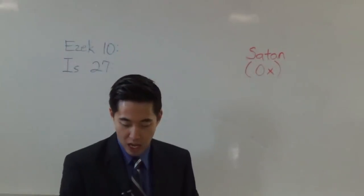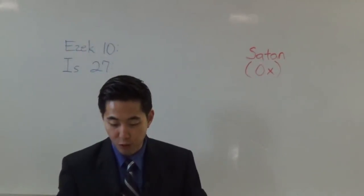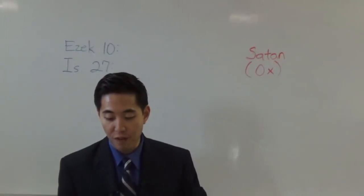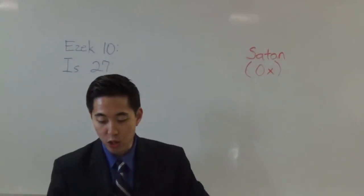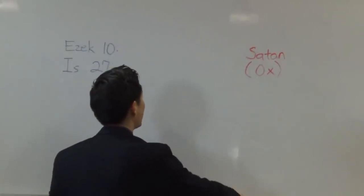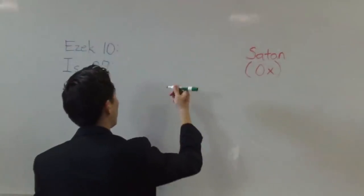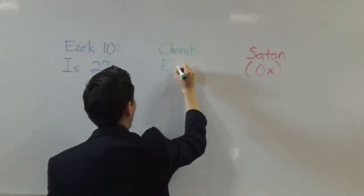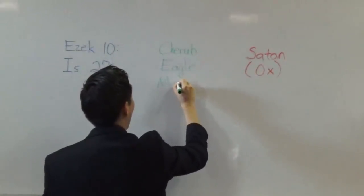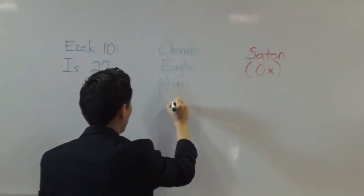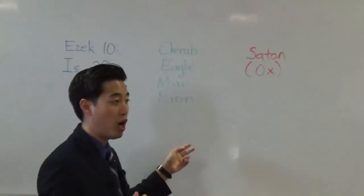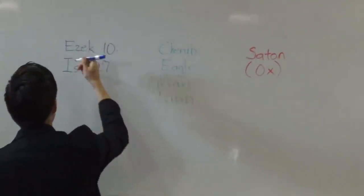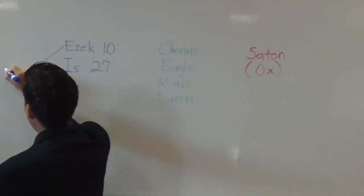Let's start with Ezekiel chapter 10, which we read in our last Bible study. You'll notice right here that there are four faces. These four faces are labeled as cherub, and then it mentions the eagle, then the man, and then the lion. These are the four categories. When you compare that with Ezekiel chapter 1, it gives the same category as these four creatures. So Ezekiel 10 goes hand in hand with Ezekiel chapter 1.